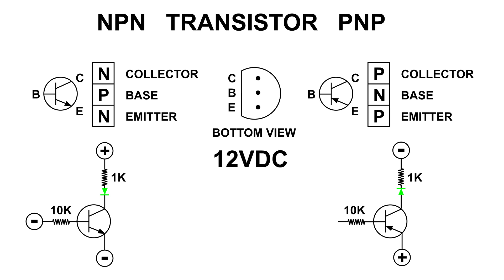On the PNP transistor, when I applied a positive voltage to it there was no change — the diode was not lit. But when I applied a negative voltage to the base of the PNP, which is N material, the diode lights. So when we have a positive voltage on the NPN transistor the diode is lit, and when we have a negative voltage on the PNP transistor the diode is lit.